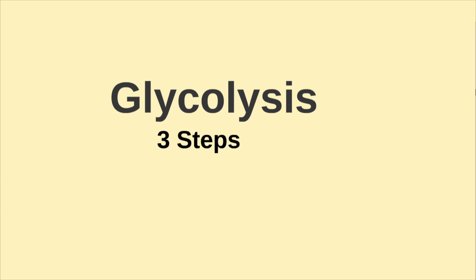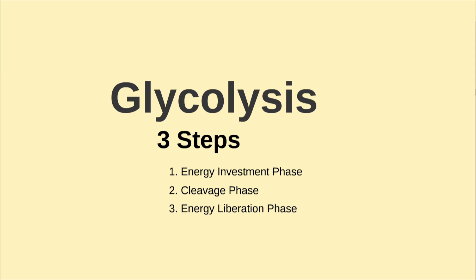Glycolysis consists of three phases containing ten steps and occurring in the cytosol. The energy investment phase, steps one through three. The cleavage phase, steps four through five. And the energy liberation phase, steps six through ten.